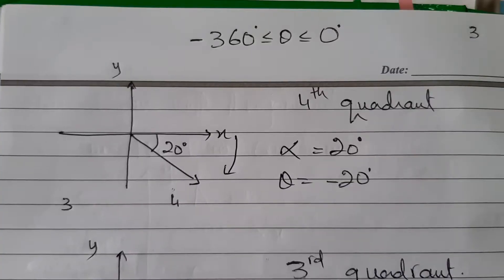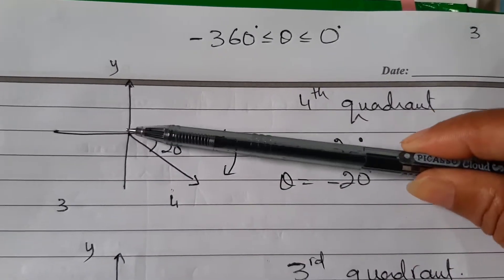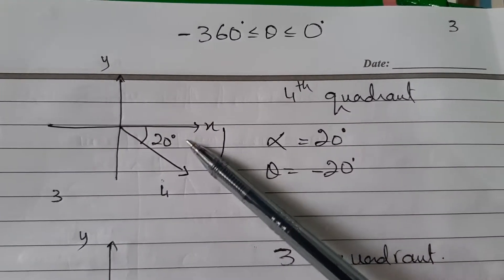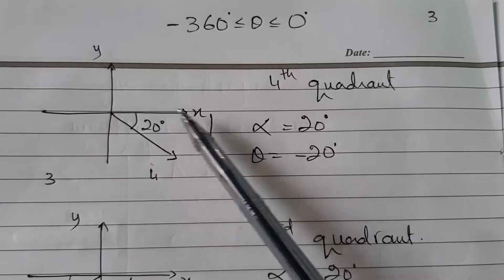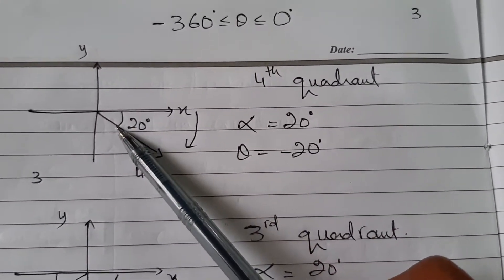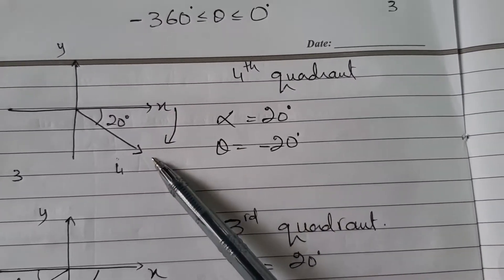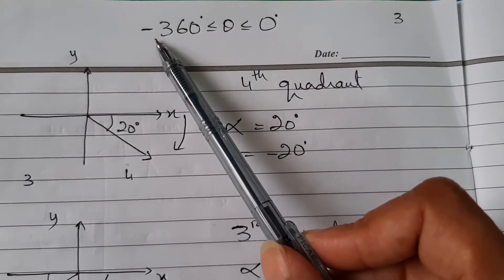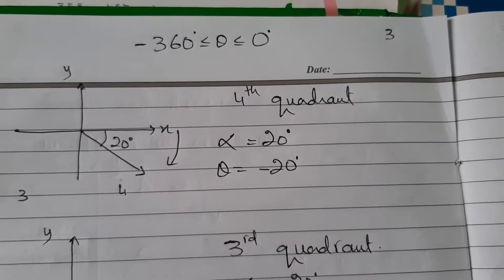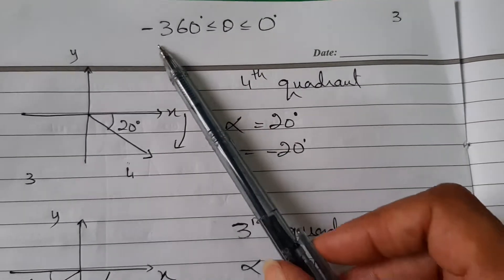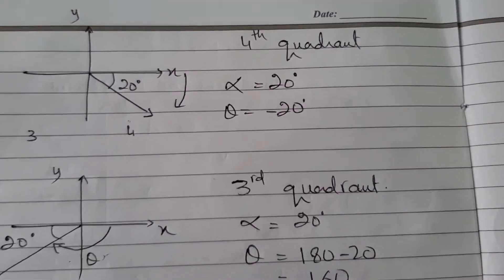Let's see more examples. For example, I have rotated something clockwise into the fourth quadrant. My basic angle is 20 degrees because I am in the fourth quadrant and I measure with the positive x-axis. So my basic angle is 20 degrees. What is my general angle? It is minus 20. Why? Because I am measuring clockwise and the range given is, for example, minus 360 to 0 degrees, which gives a clear hint that you have to measure clockwise. How do you decide clockwise or anti-clockwise? It depends on the range given in the question.